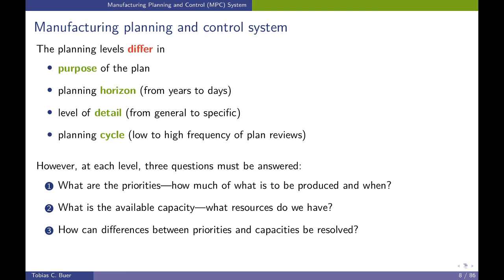If our priority is way lower than our capacity, we have options to balance both. We can reduce capacity to save money, or we can adjust and increase our priorities to use our capacity to the best level. Those are valid strategies, and the answers to these questions depend very much on the specific plan being made.